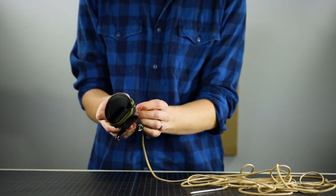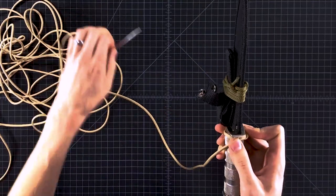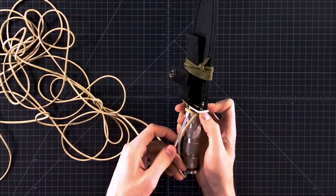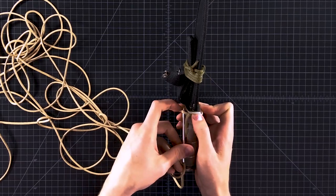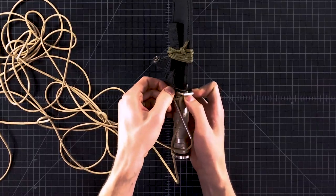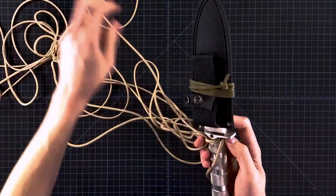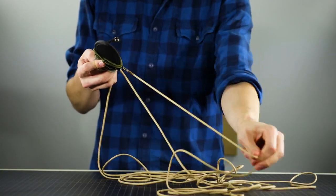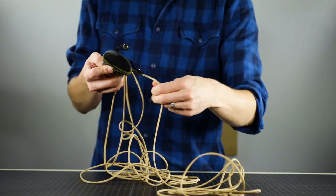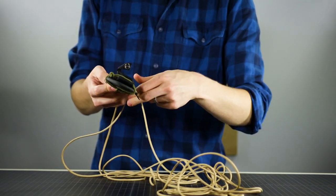So now we've got basically an overhand knot right there. And we're just going to do that again, right next to it, going up through the bottom. And pull your slack through. 25 feet sometimes takes a while and gets tangled so you've got to watch out.